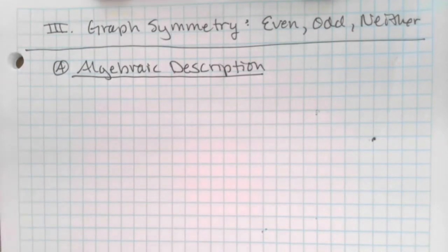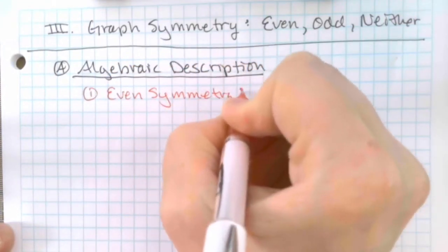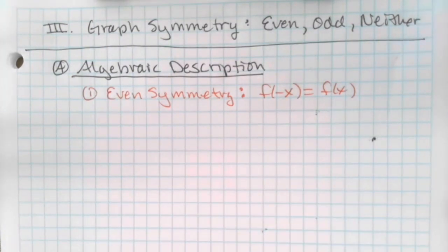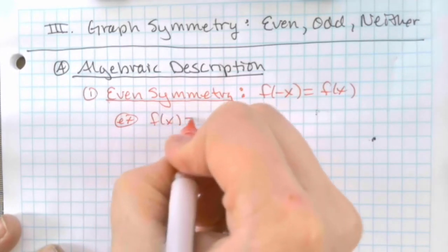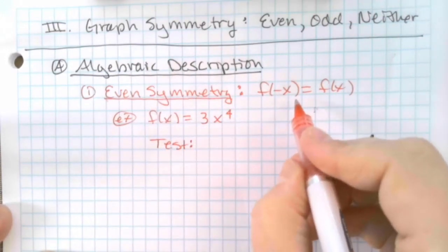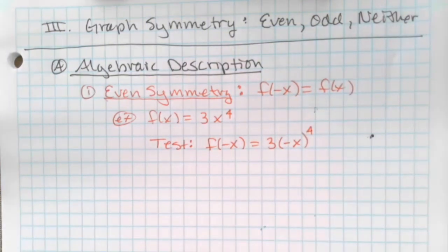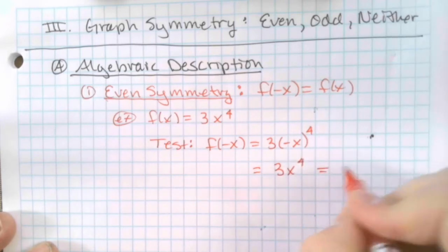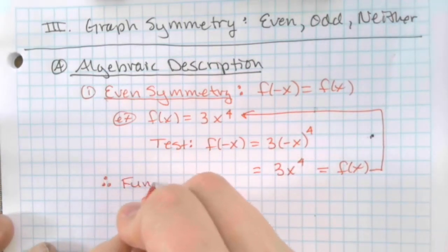The rule for even symmetry — number one — is that f of negative x is equal to f of x. In other words, you replace x with negative x, simplify, and you get what you started with. An example of even symmetry is f of x equals 3x to the fourth. You have to run a test: find f of negative x by replacing x with negative x — use your parentheses wisely — to the fourth. When you raise a negative to an even power, it ends up being positive, so you get 3x to the fourth, which is just like the original function. Therefore, the function is even.